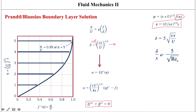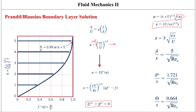It can also be shown for the displacement and momentum thicknesses as well — Blasius found those relationships too. The boundary layer is thin provided the Reynolds number is large. Based on that, we get three important boundary layer thickness relationships. Now that we know the velocity profile inside the boundary layer from the Blasius solution, we can determine the wall shear stress.